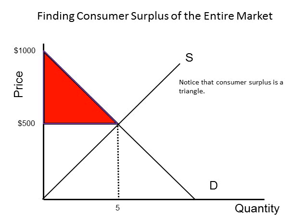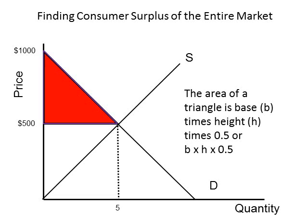Let's go back to the first example: the maximum price anybody will pay is $1,000, the equilibrium price is $500, and there are 5 units. The most important thing to observe is that the area bounded by the maximum price, the equilibrium price, and the equilibrium quantity forms a triangle. So by calculating the area of that triangle, the consumer surplus for the entire market can be found. The area of a triangle is the base (B) times the height (H) times 0.5. The base of the triangle is the distance from the price axis to the equilibrium quantity. The height is the distance from the equilibrium price to the maximum price.